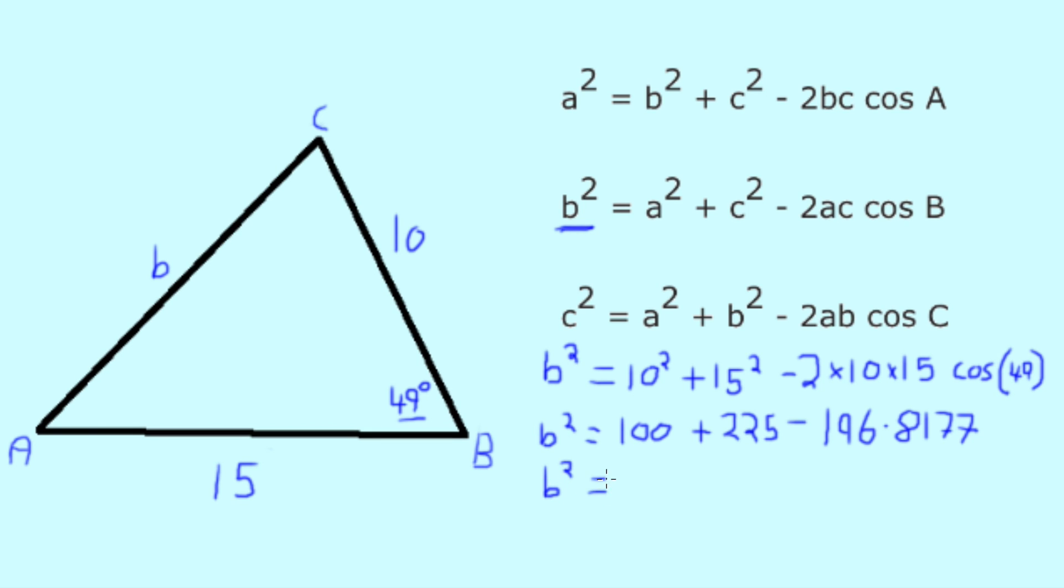Below, we can further simplify our expressions by writing b squared equals 325 minus 196.8177. When we work out this expression, we reach the answer 128.1823, which we know will be our b squared.